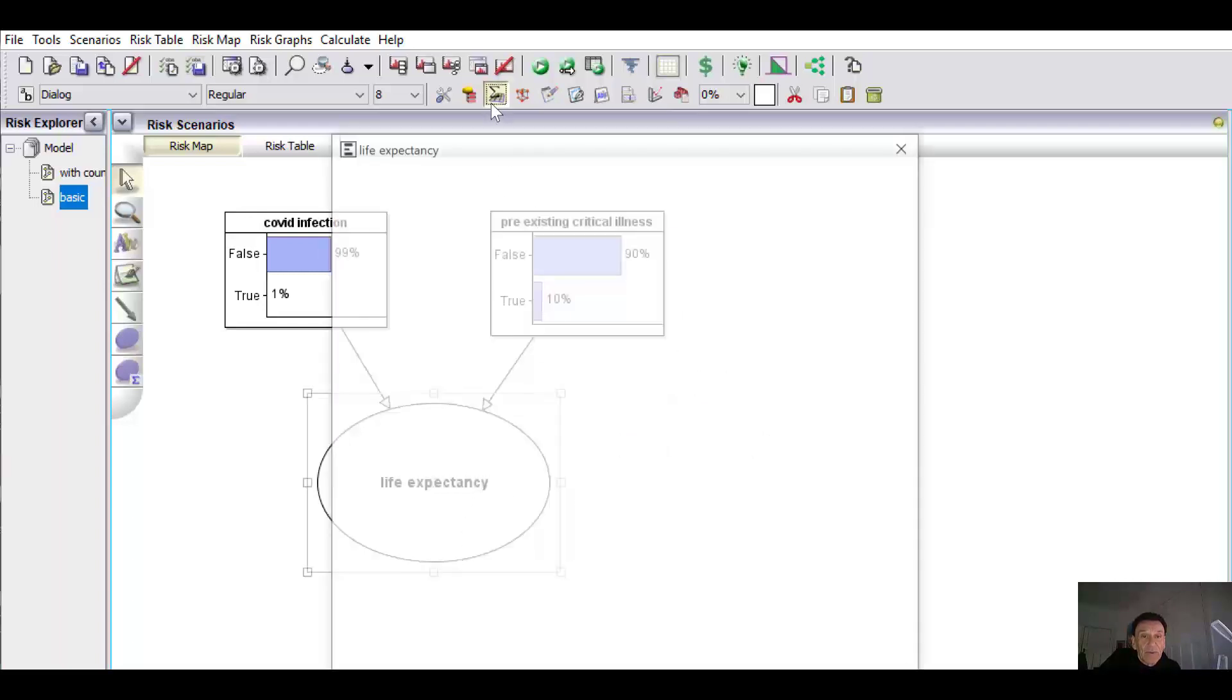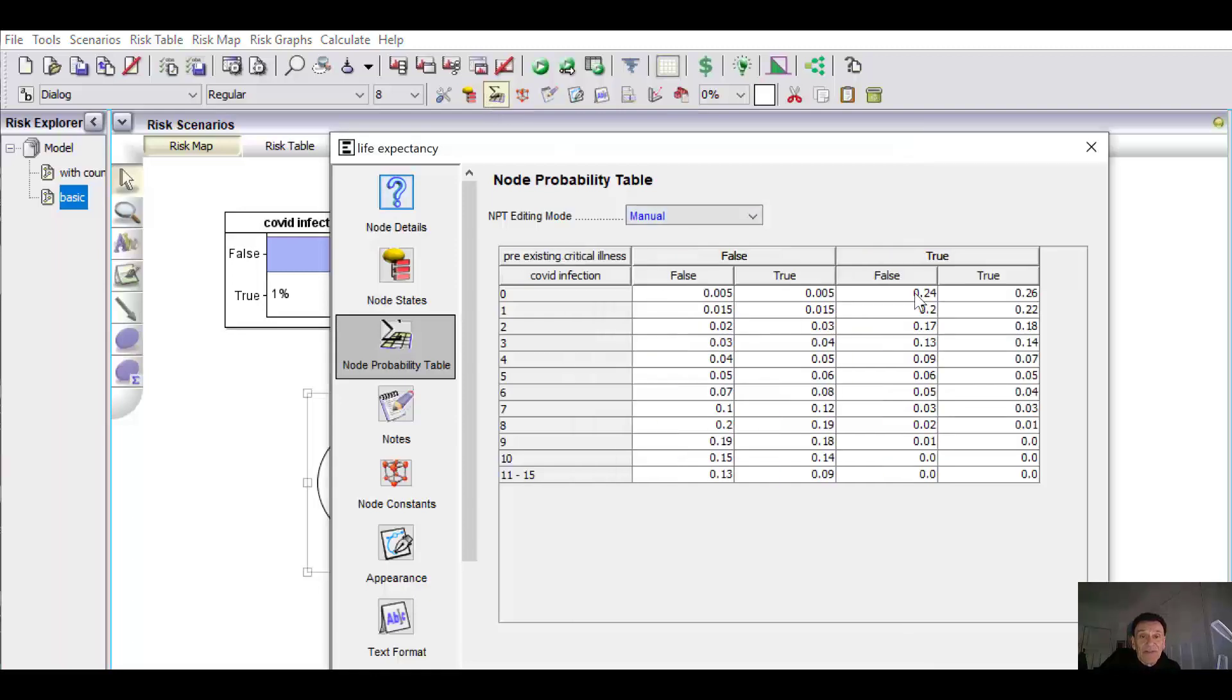the conditional probability table looks like that, where of course you get higher probabilities in the lower life expectancy when pre-existing critical illness is true, and generally higher probabilities of lower life expectancy with the Covid infection.